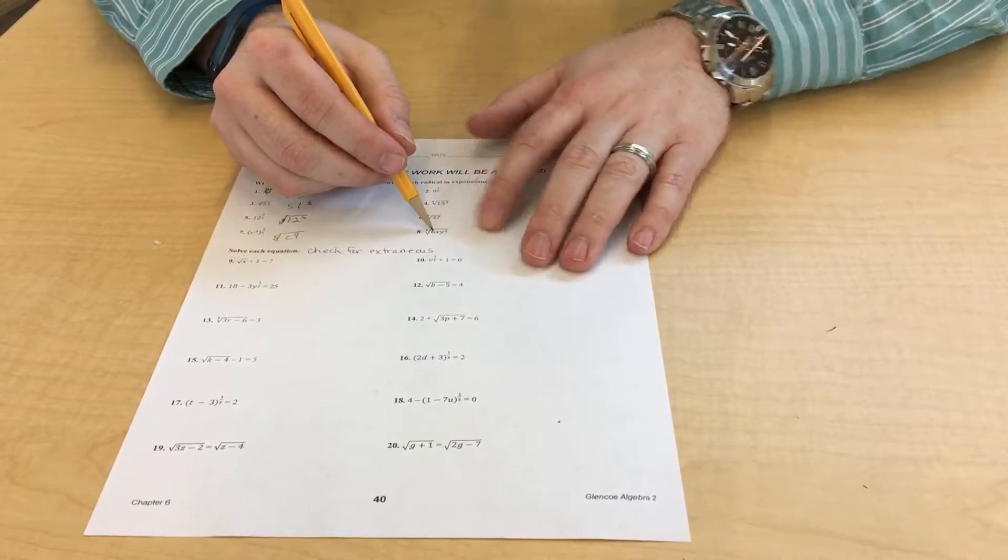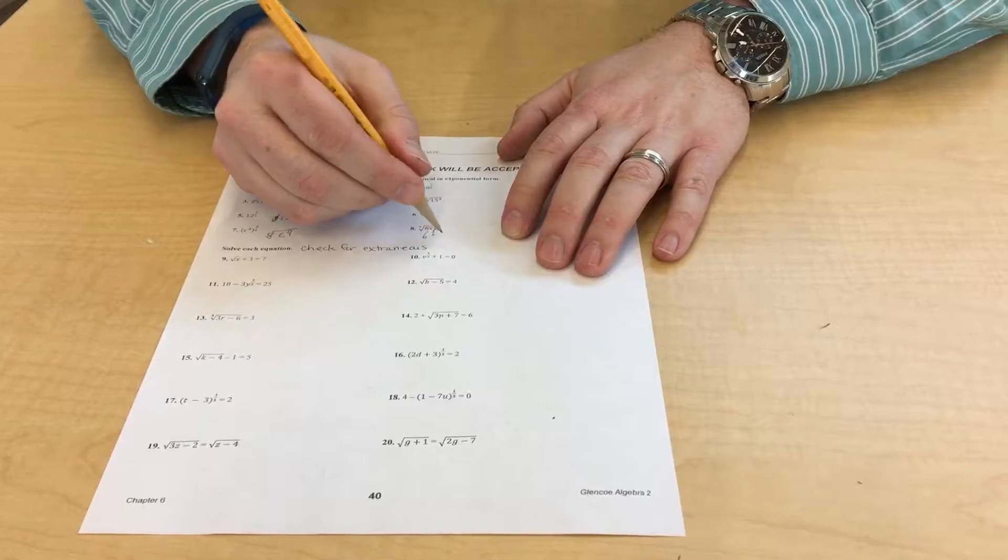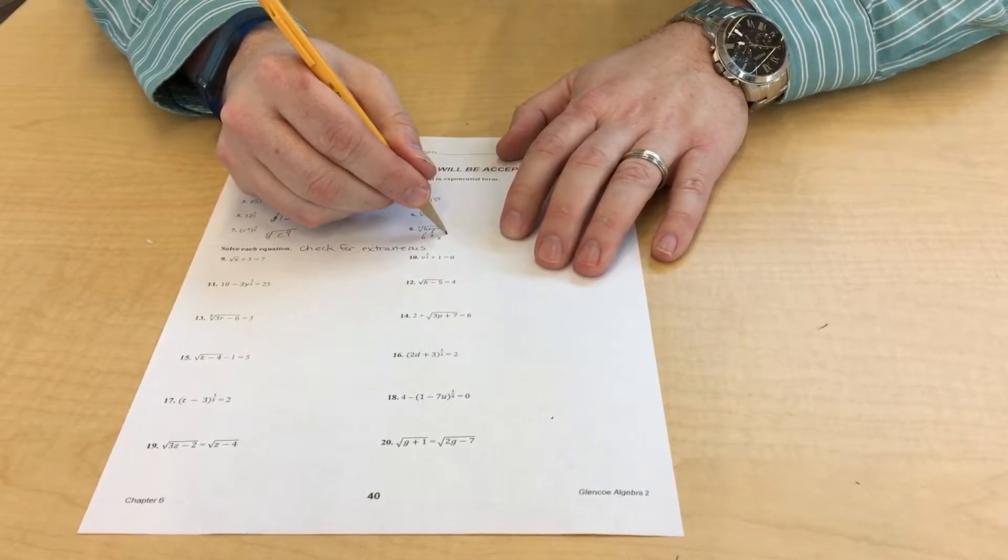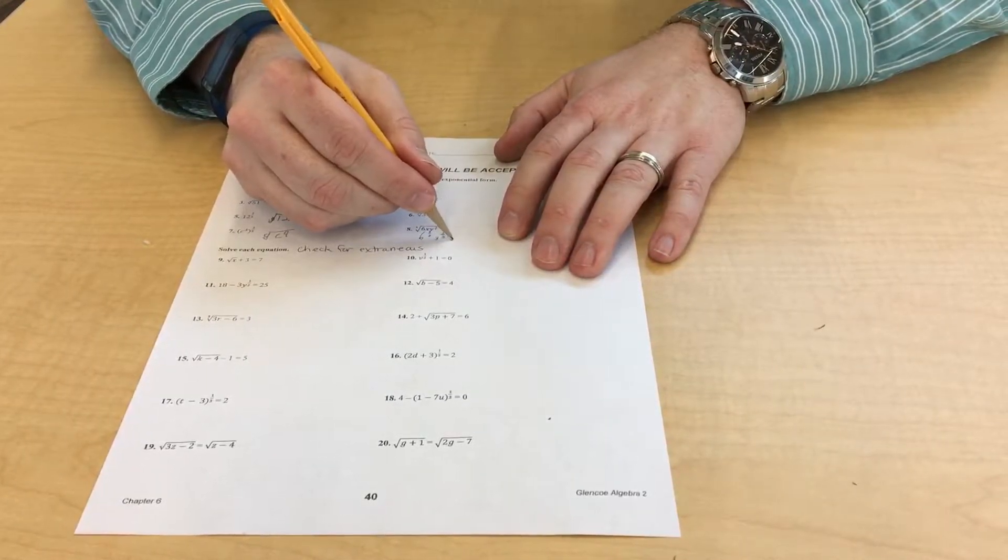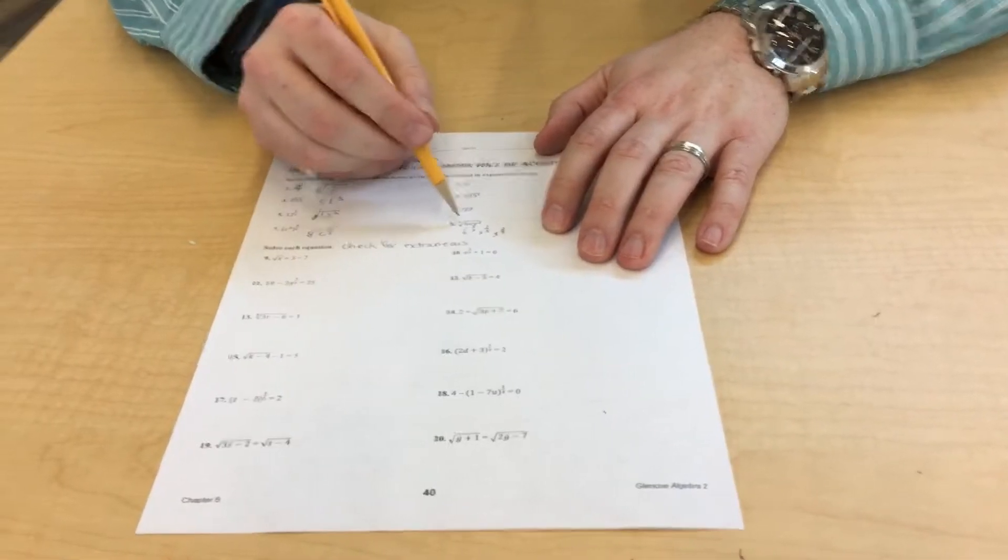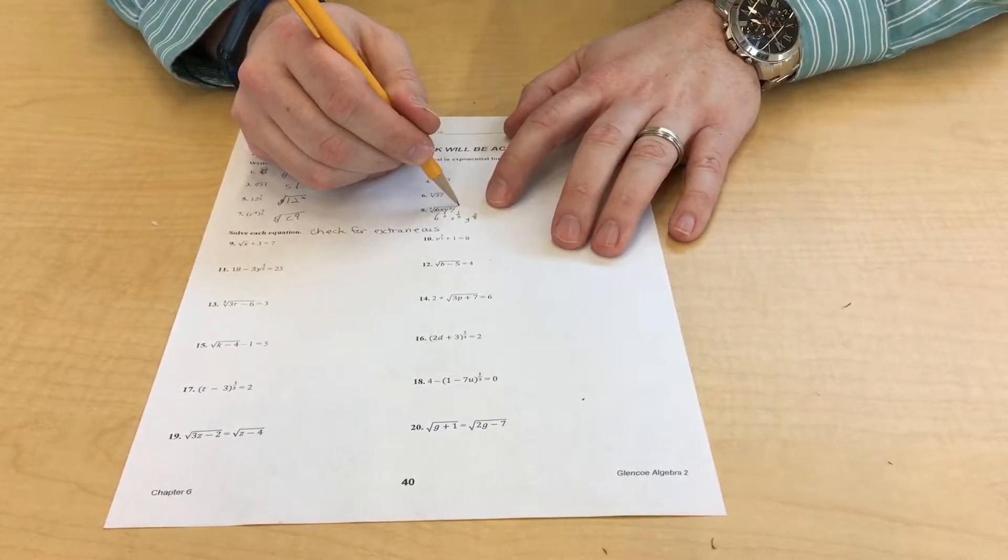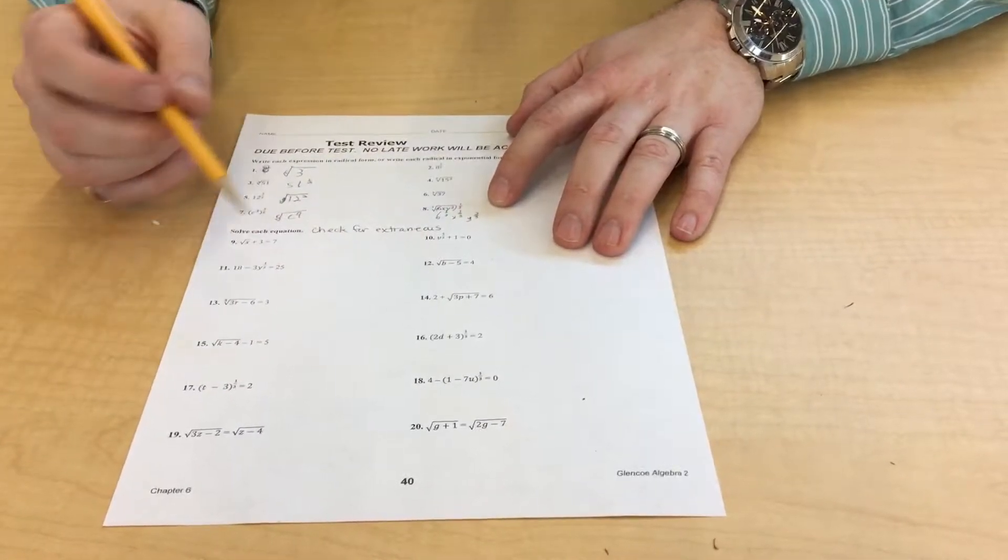And on this one, you would take it a step at a time. So it would be 6 to the 1/3 power, 6 to the 1/3 power, and Y to the 2/3 power, since it's squared. It could also be written as the whole thing here, 6xy squared to the 1/3 power. And that would be acceptable.